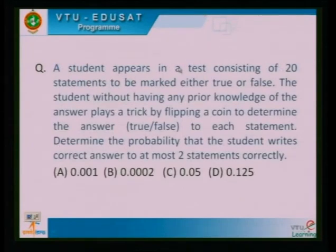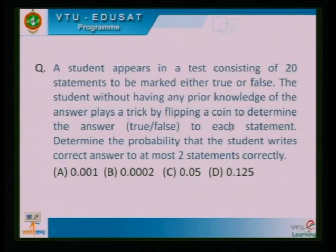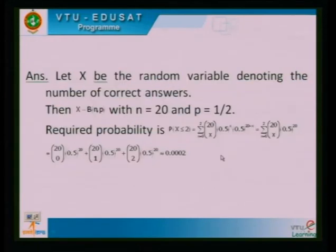A student appears in a test consisting of 20 statements to be marked either true or false. The student, without knowledge of the answer key, flips a coin to determine each answer. Determine the probability that the student writes the correct answers to at most two statements correctly. The calculated probability is approximately 0.0002.